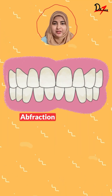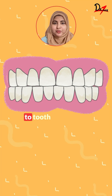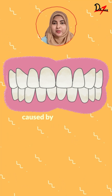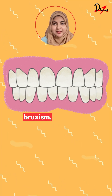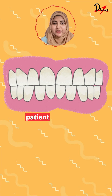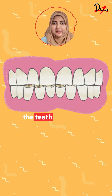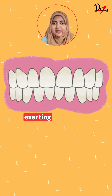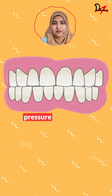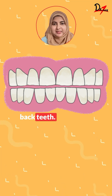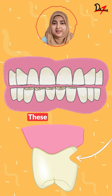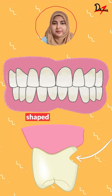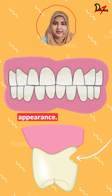Abfraction occurs due to tooth-to-tooth flexural forces, such as those caused by bruxism, where a patient grinds the teeth from side to side, exerting excessive pressure on the back teeth. These lesions typically have a V-shaped angular appearance.